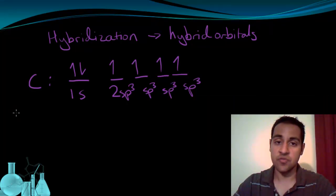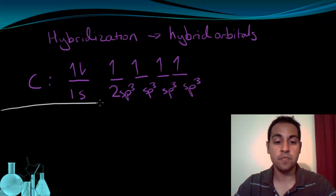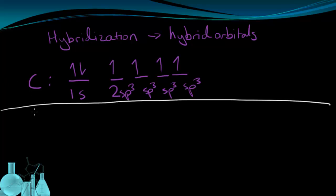So if you know the Lewis structure of a molecule, you can determine the correct hybridization that's taking place in that molecule. Let's look at boron trifluoride, BF3. We know the Lewis structure for this, I'm just going to do it quickly, is going to be boron surrounded by three fluorine atoms.